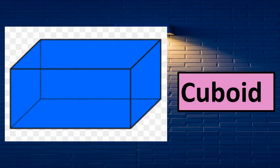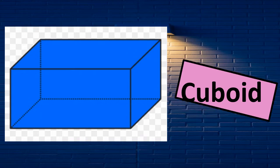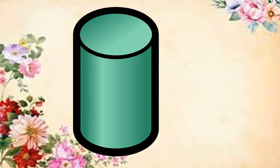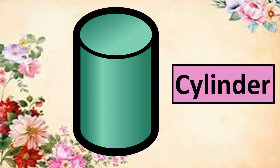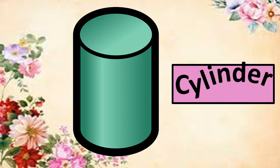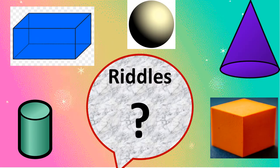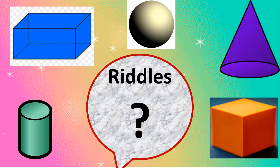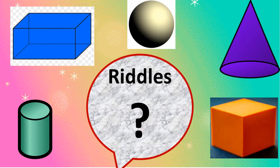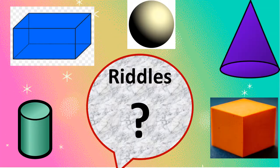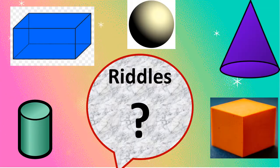Yes, the name of this shape is cuboid. Yes, the name of this shape is cylinder. So students, now we discuss some riddles about these shapes: cylinder, cuboid, sphere, cone, and cube.